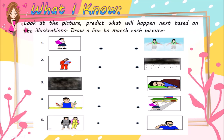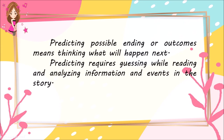Look at the picture. Predict what will happen next based on the illustrations. Draw a line to match each picture. Predicting possible endings or outcomes means thinking about what will happen next. Predicting requires guessing while reading and analyzing information and events in the story.